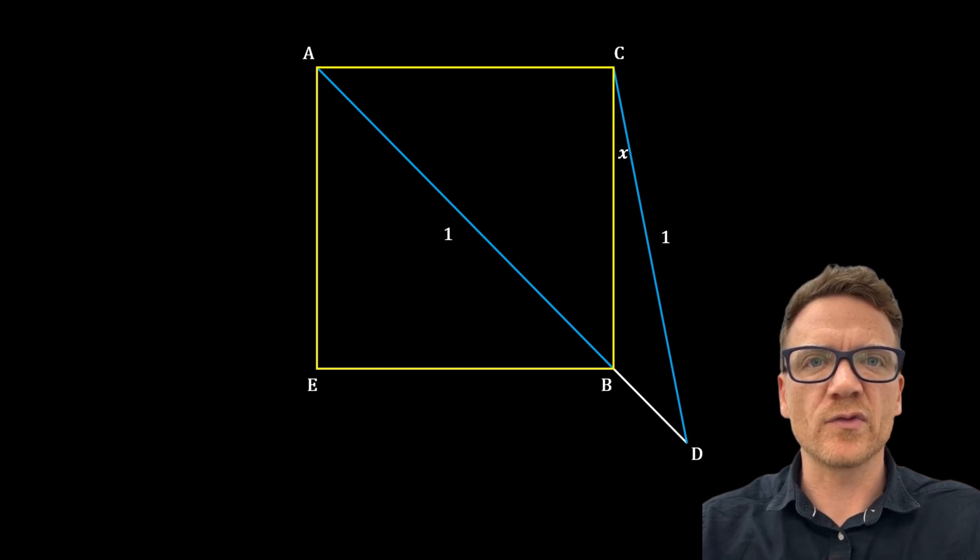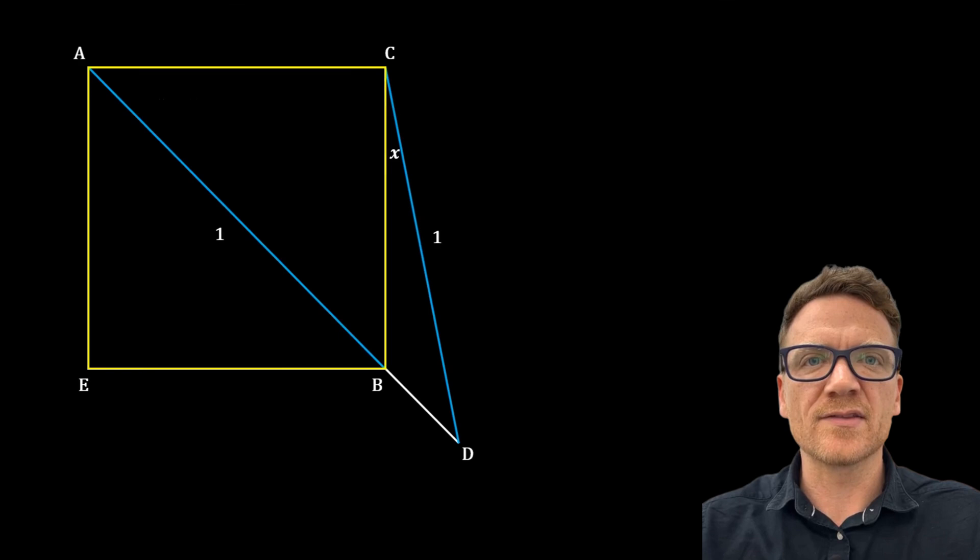Some things that we know about this already is we have a diagonal line AB and it is equal in length to the line segment CD.